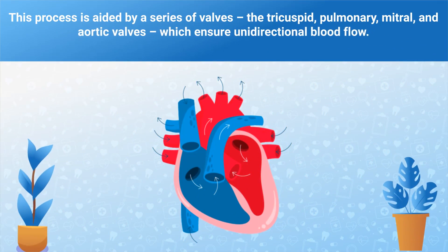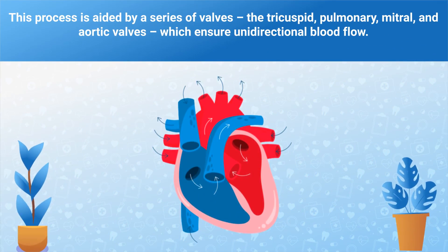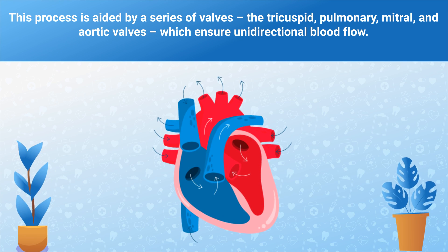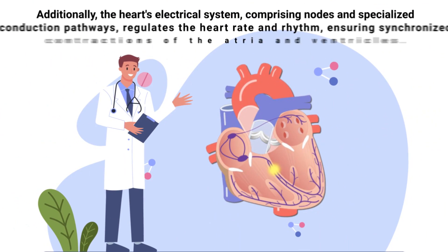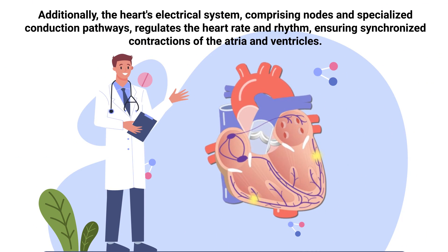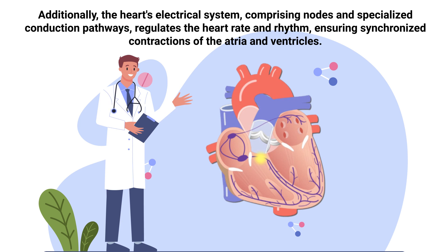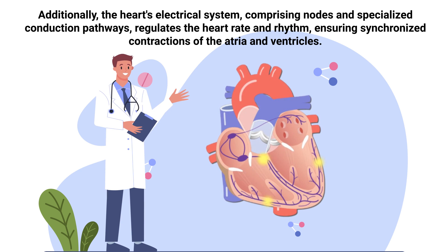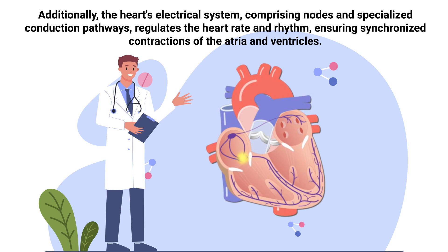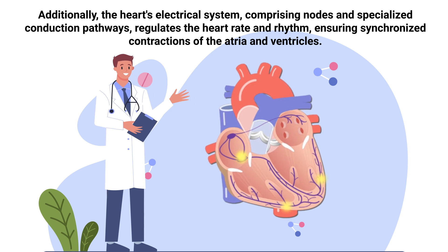This process is aided by a series of valves — the tricuspid, pulmonary, mitral, and aortic valves — which ensure unidirectional blood flow. Additionally, the heart's electrical system, comprising nodes and specialized conduction pathways, regulates the heart rate and rhythm, ensuring synchronized contractions of the atria and ventricles.